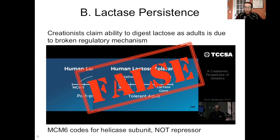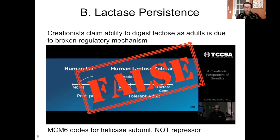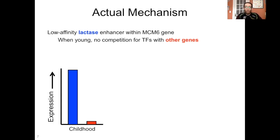MCM6 does not code for a repressor. It codes for a helicase subunit, and helicase is an enzyme involved in DNA replication. The MCM6 gene has nothing to do with lactase repression — and this is not a secret. You know how I learned that MCM6 has nothing to do with lactase repression and that it codes for a helicase subunit? I googled it, and the first thing that comes up is the gene reference page for MCM6 from the Human Genome Project on GenBank, and it just tells you straight up what it does: it makes a helicase subunit, not a repressor. The actual mechanism of lactase persistence does not involve any loss of regulation at all.